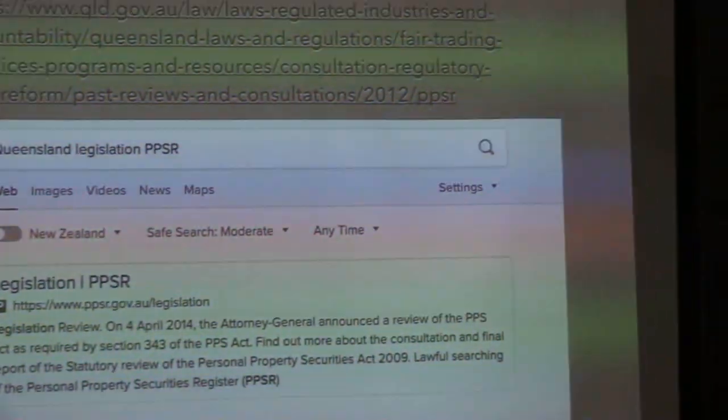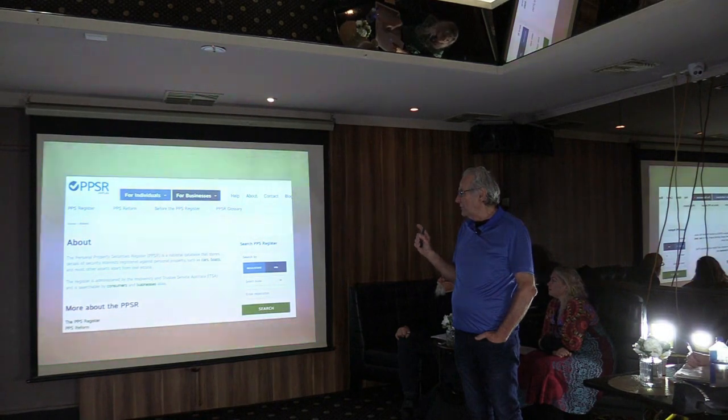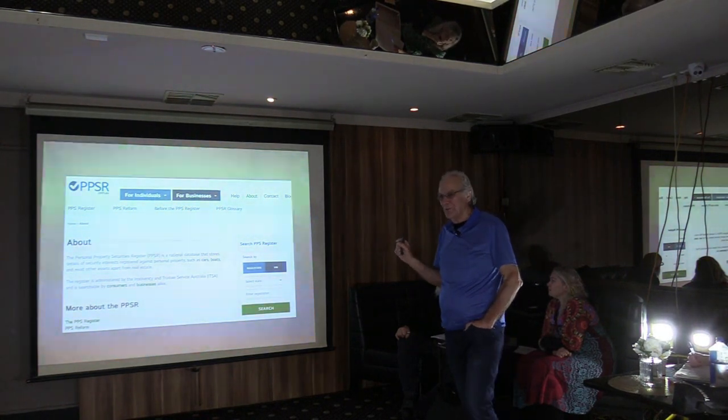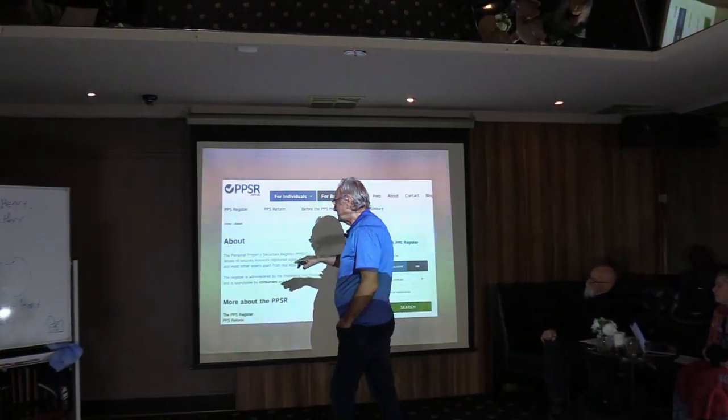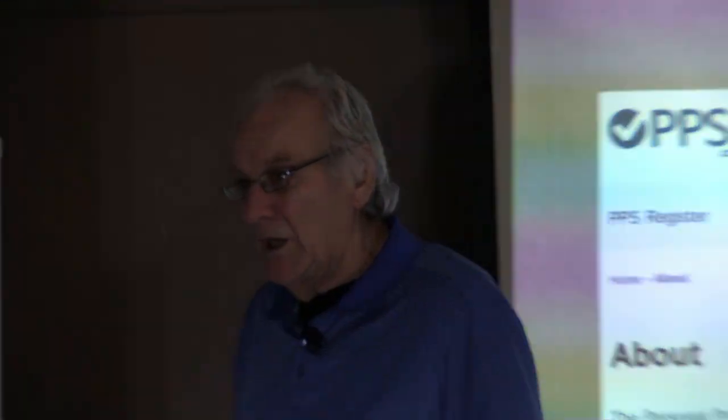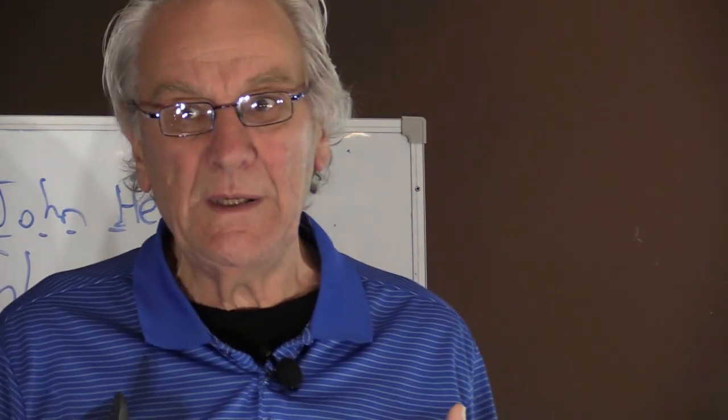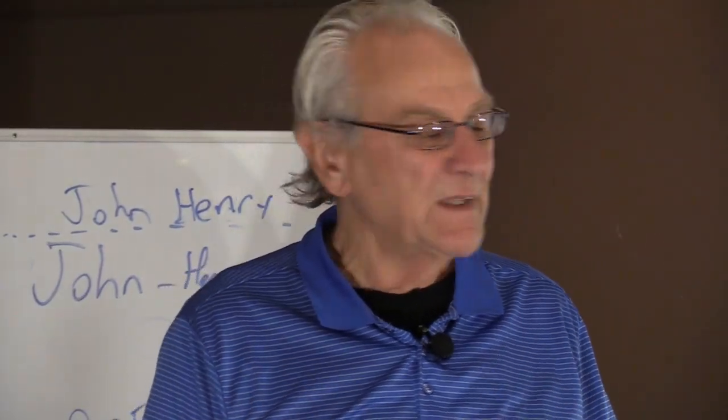You'll find where your legislation is. The Personal Property Security Register is a national database that stores details of security interests registered against personal property. Now this is where they try and trick you — they want cars and boats and most other assets apart from real estate. We are the real estate.